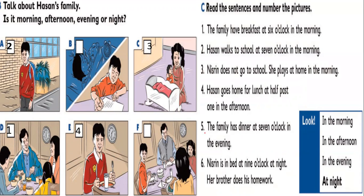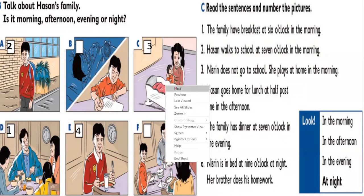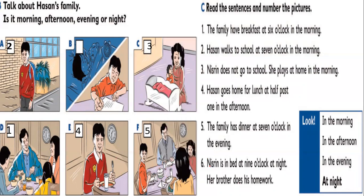We move to the next point, which is number five: the family has dinner at seven o'clock in the evening. So here we have the family having their dinner in the evening. Now the last one: Misrim is in bed at nine o'clock at night. Her brother does his homework. So here Misrim is sleeping and her brother is doing his homework.